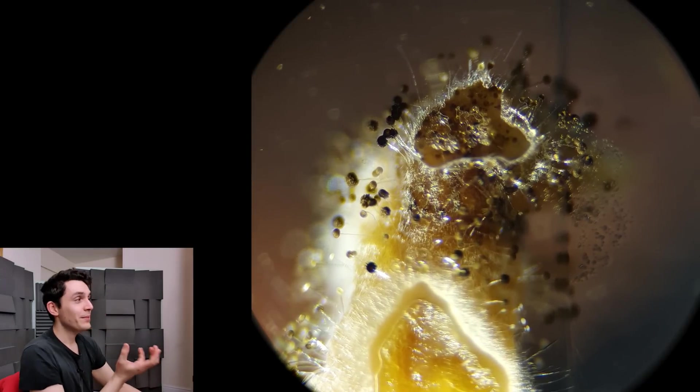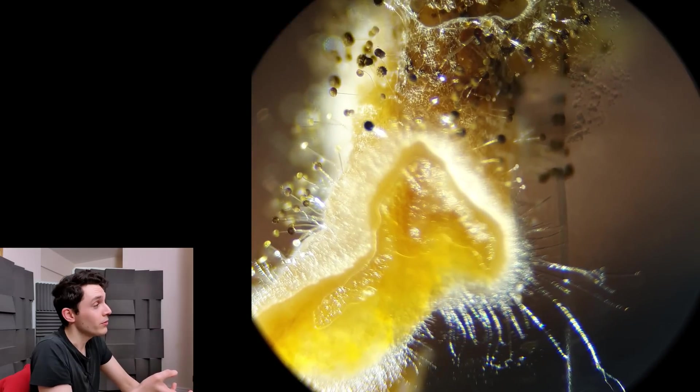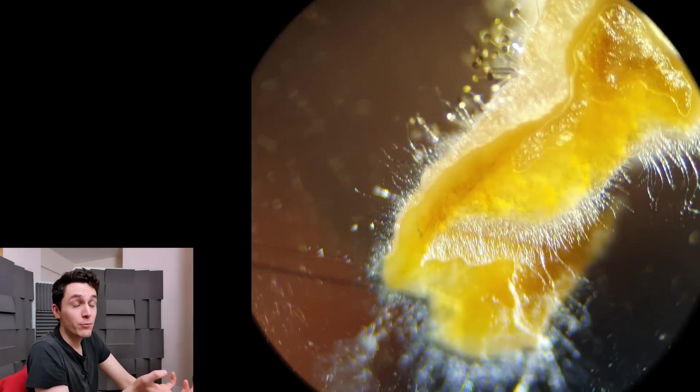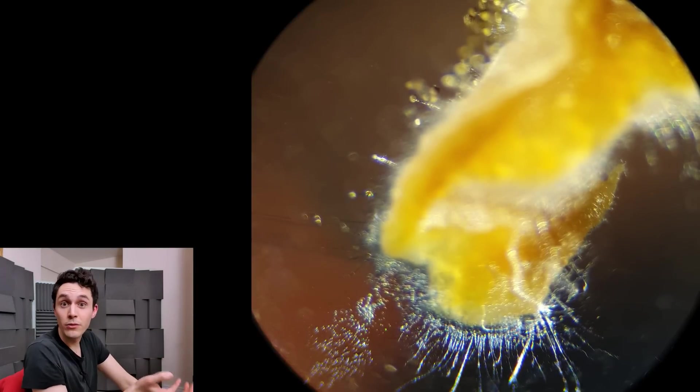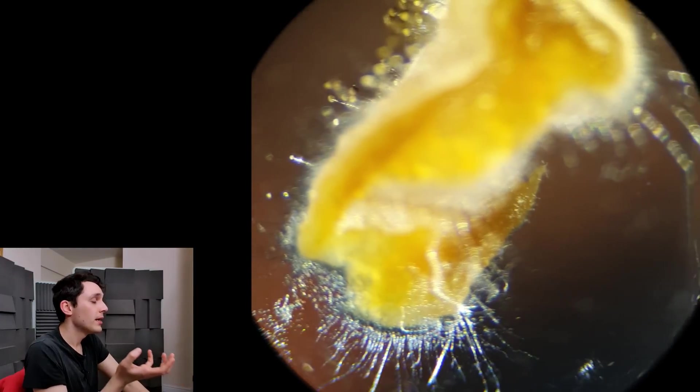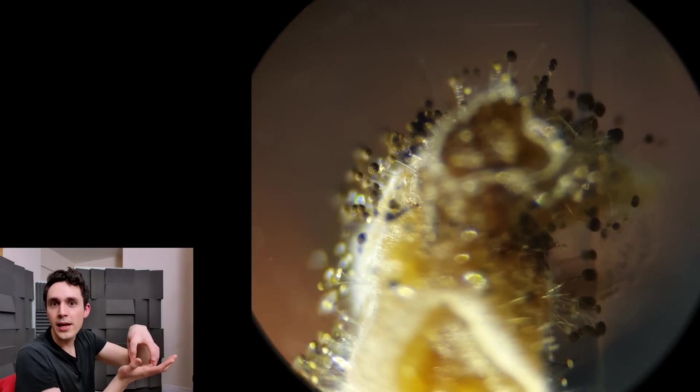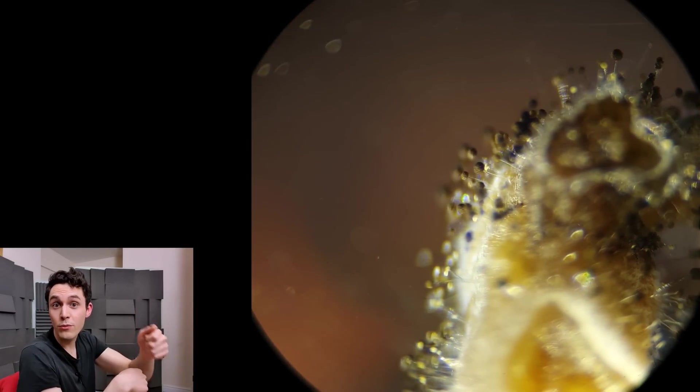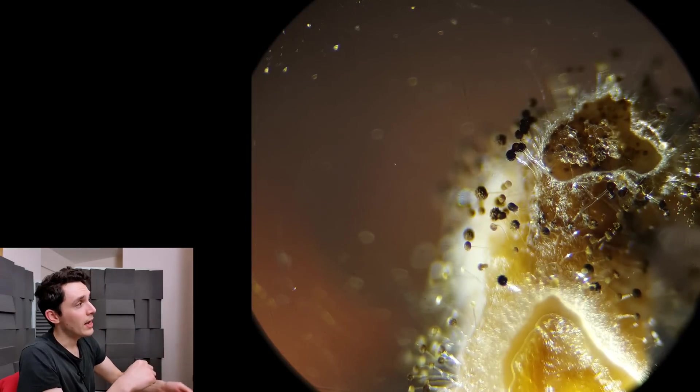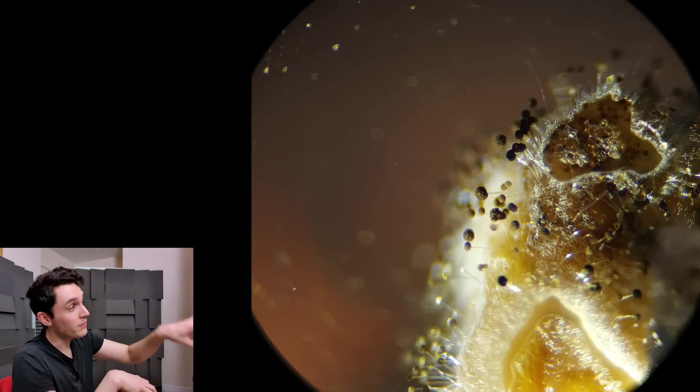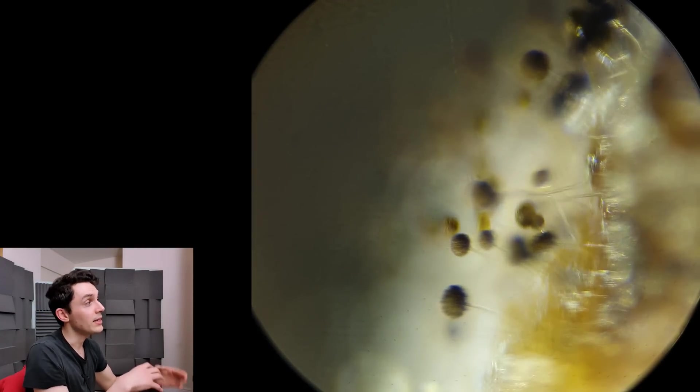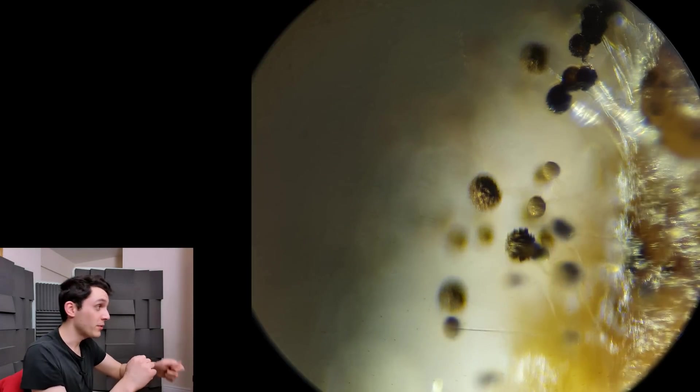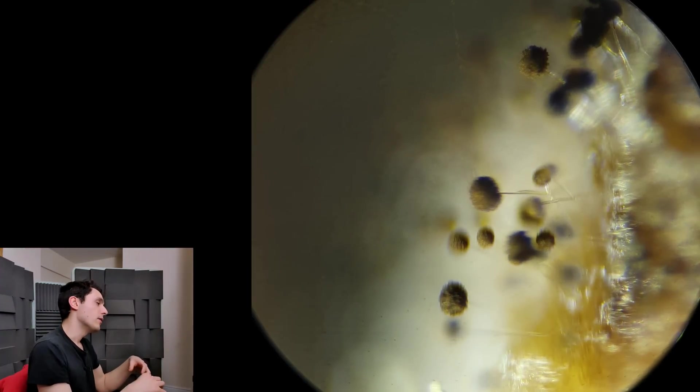The word Aspergillus actually isn't Latin or Greek, which is unusual. It's actually derived from an Italian word called Aspergillum. If there are any Catholics out there, or if you've been to a Catholic mass, you'll probably have seen one. An Aspergillum is like a stick with a hollow ball on the end. The priest will dip it in holy water and sprinkle the holy water over things and the congregation. The person who first discovered this and described it, I think his name was Antonio Michelli, was a priest and a biologist in the 1700s. He thought it looked like an Aspergillum, so he described it as Aspergillus.